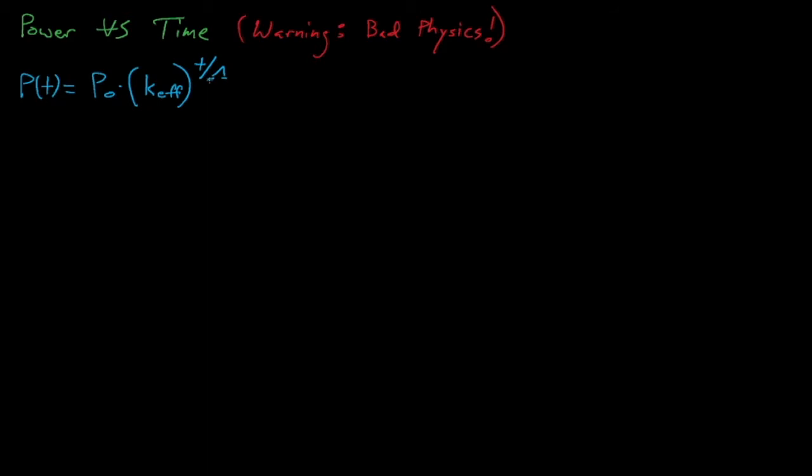This lambda term is known as the prompt neutron generation time, which is simply the average amount of time that it takes for one fission neutron to generate another fission neutron in our system. Lambda is about equal to 10 to the minus 4 for thermal systems, and 10 to the minus 6 for fast systems, where things of course move faster.